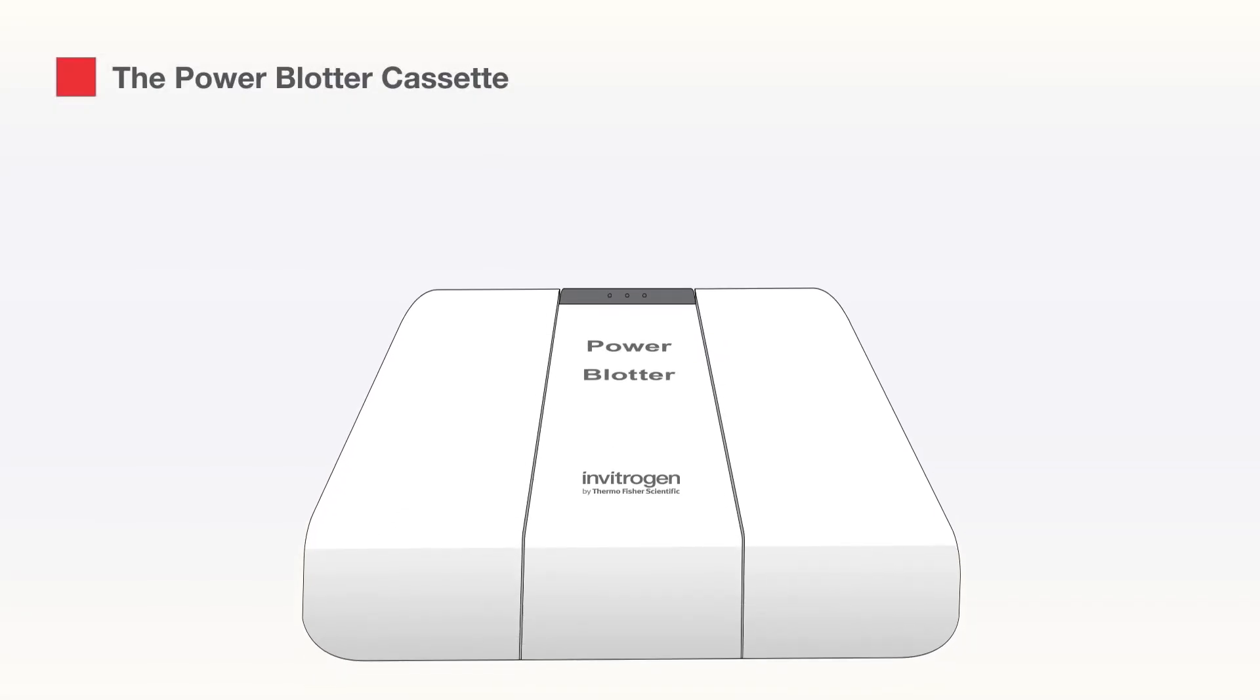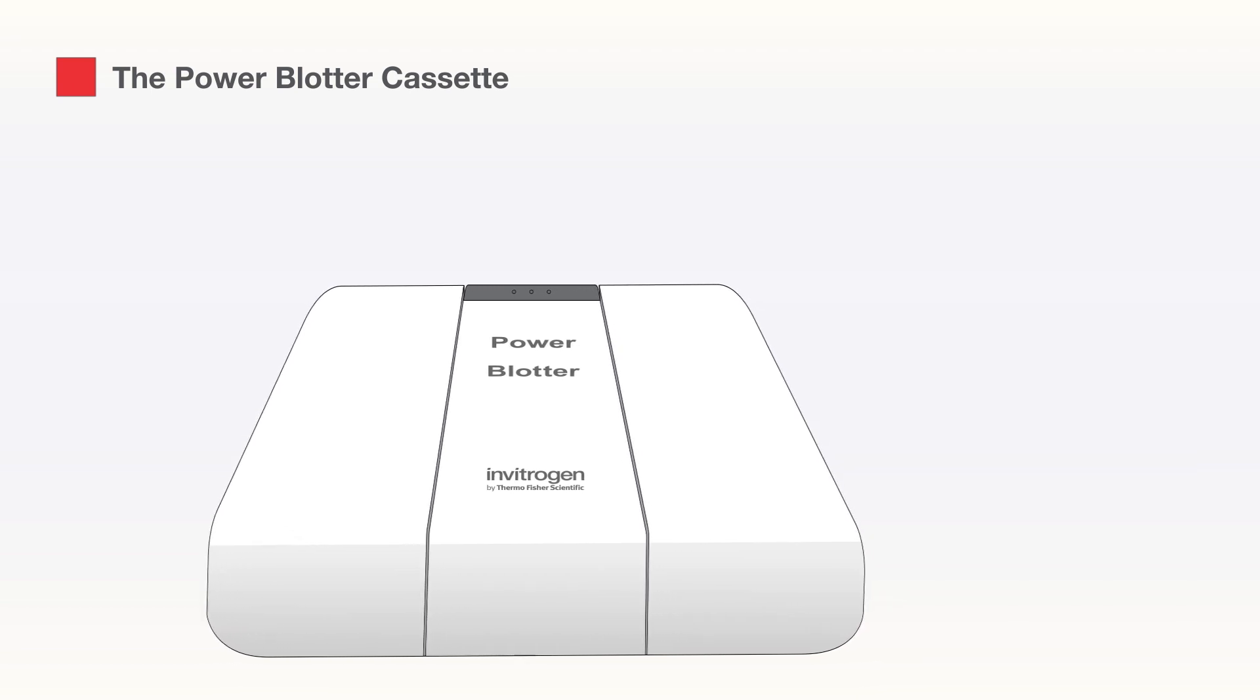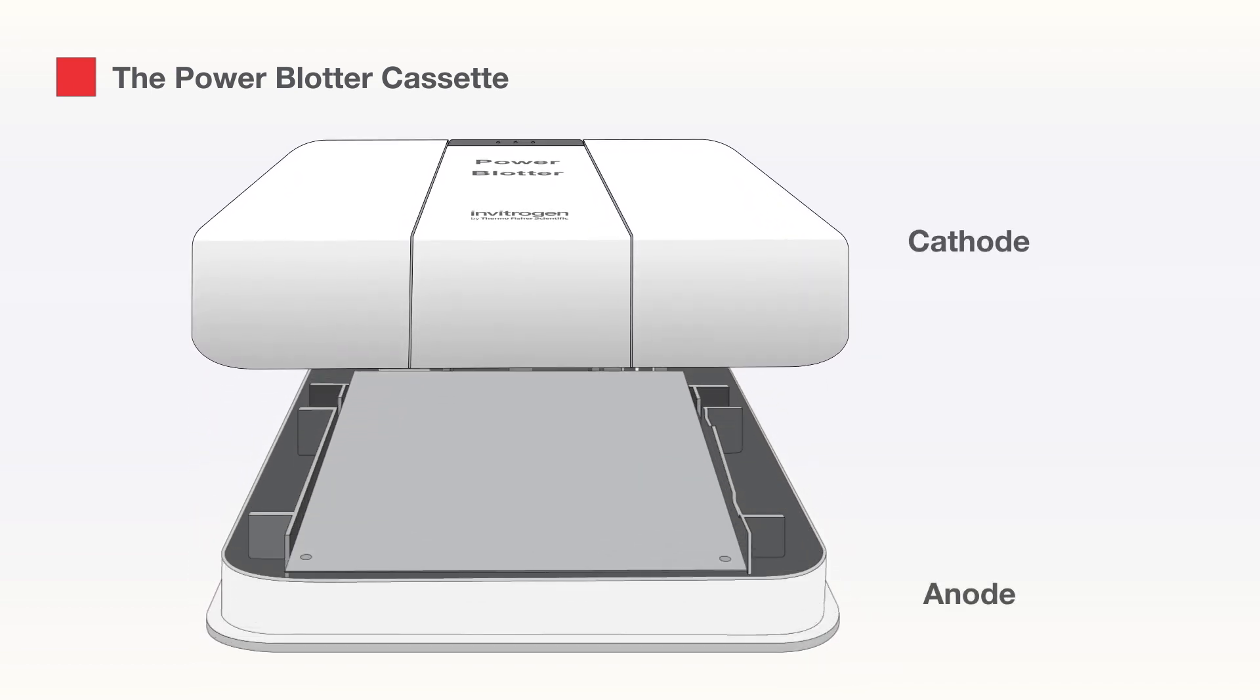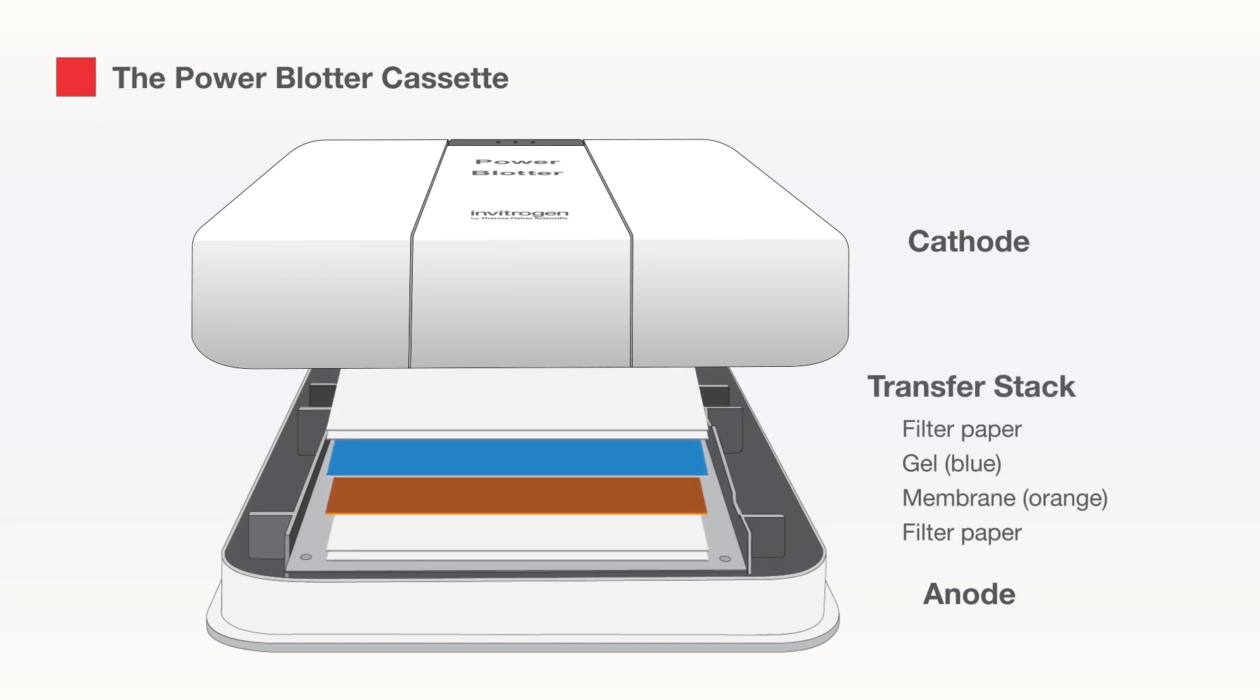In the Power Blotter system, the cathode and anode are plates that are fixed to the top and bottom of the cassette frame, and the transfer stack is placed in between them during the transfer process.